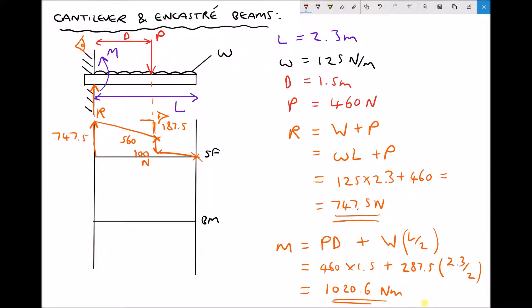Once again the beam is hogging, taking on a negative bending shape. So the maximum bending moment occurs at the support and is minus 1020.6 newton metres, with zero bending moment at the free end.